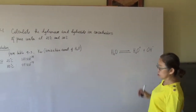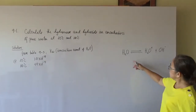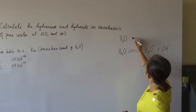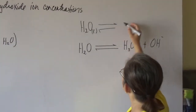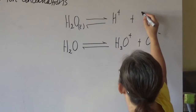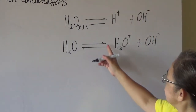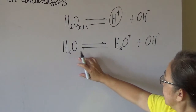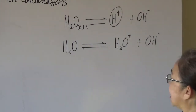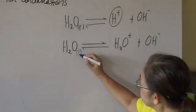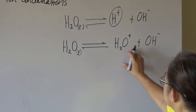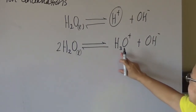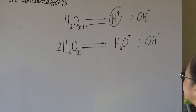So if you have water, which is liquid, it will ionize into hydrogen ion and OH ion. Take note that the hydrogen ion is the same as the hydronium ion. So two moles of liquid water will ionize into one mole of hydrogen ion and one mole of OH ion.